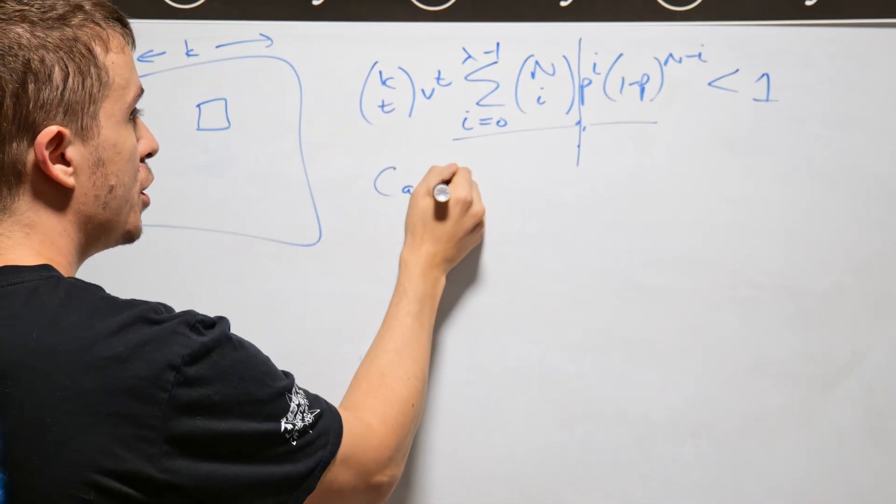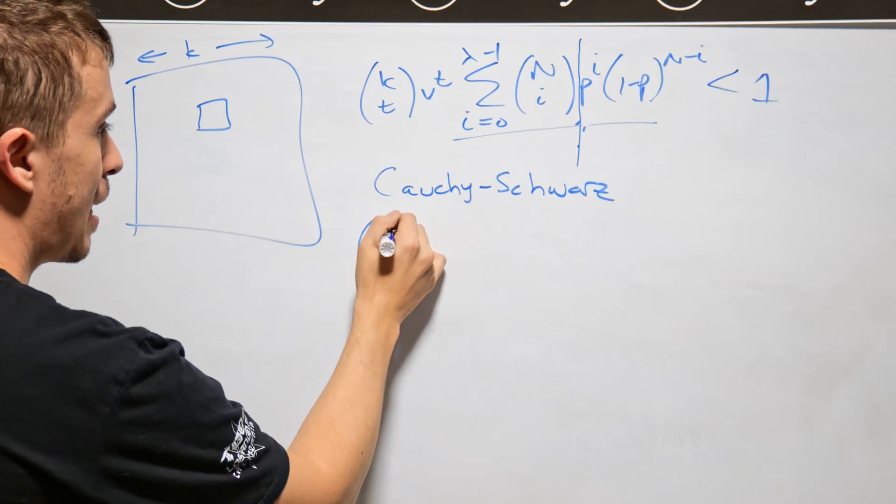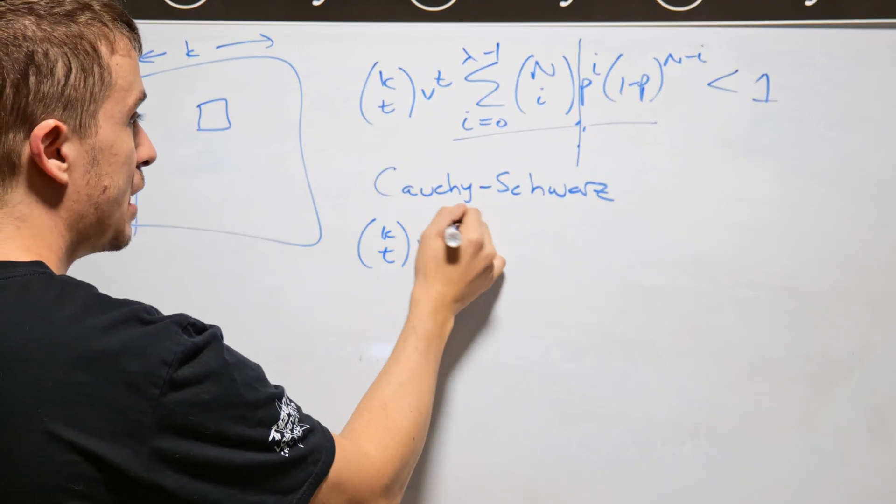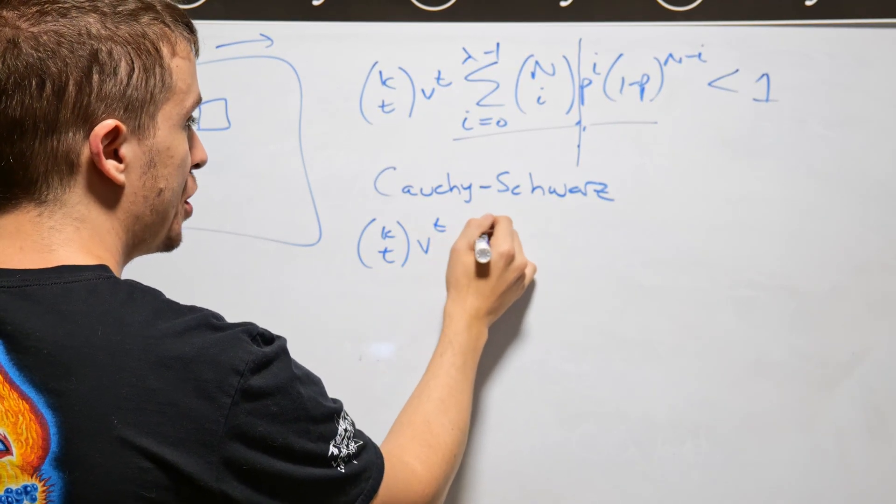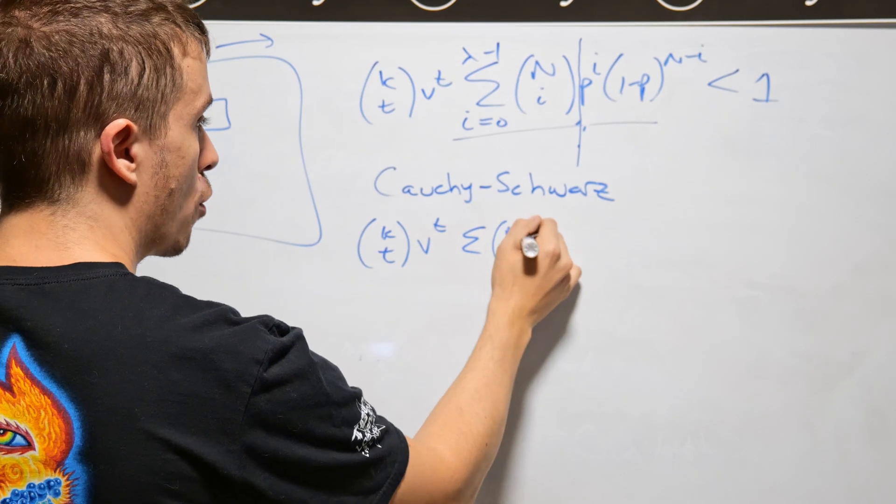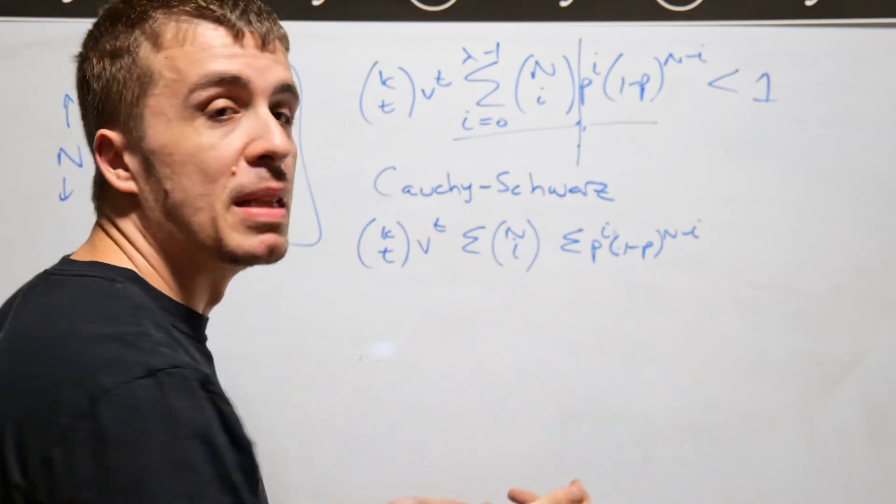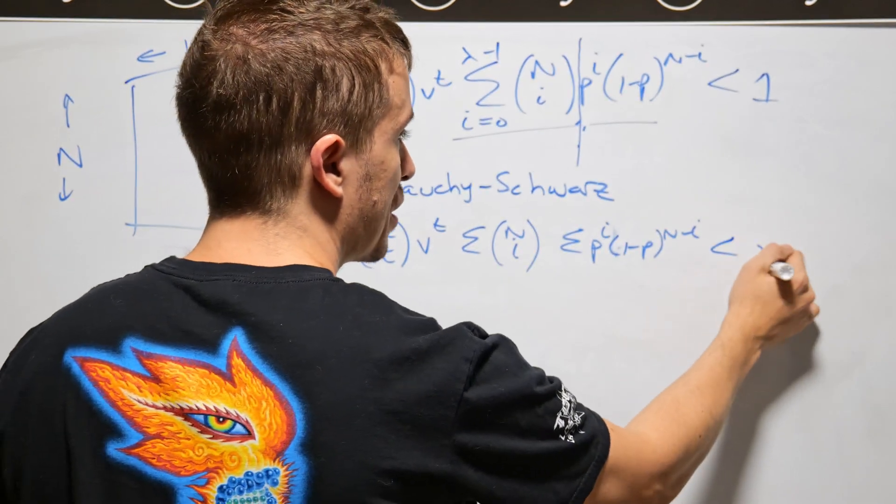So I applied Cauchy-Schwarz. So then what you're going to get is something like k choose t times v to t times some sum of binomial coefficients, and then another sum that's based on powers, and then this is obviously less than one.